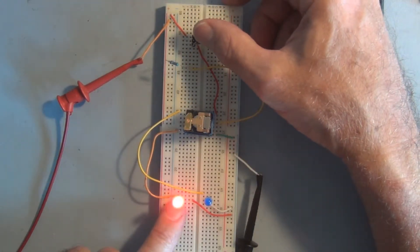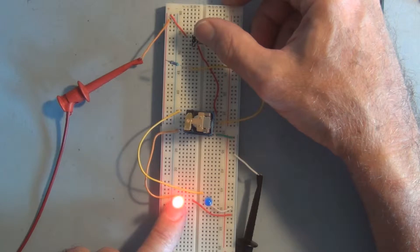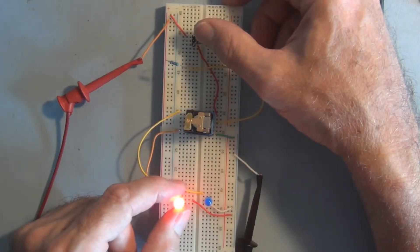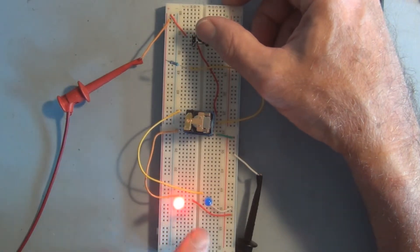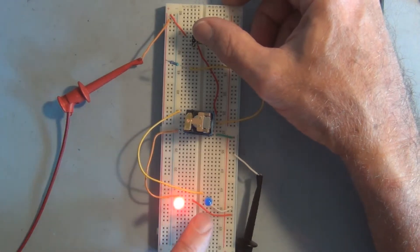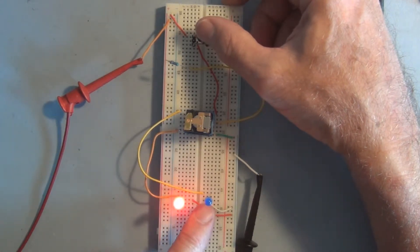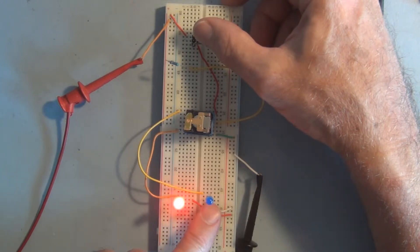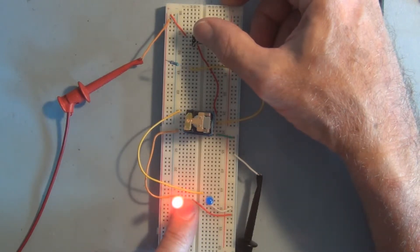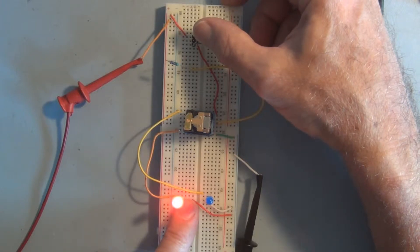And this is normally closed side of the relay, so this LED is on. And when I apply five volts, I activate the relay and move the contact so that the normally open is now closed, and the blue LED will then go on, and the red LED on the left here will go out.